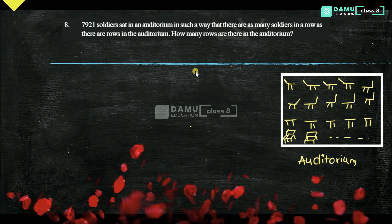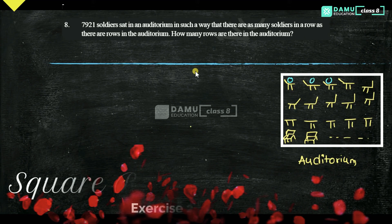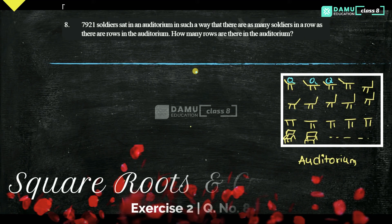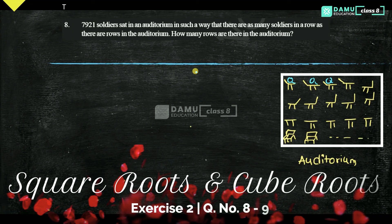So here is the 8th question. 7921 soldiers sat in an auditorium. They sat such that soldiers are all seated in the auditorium.